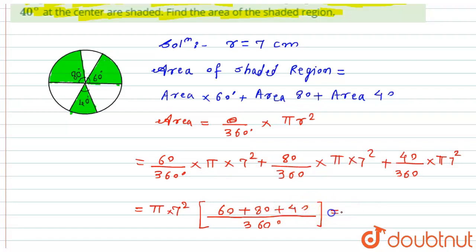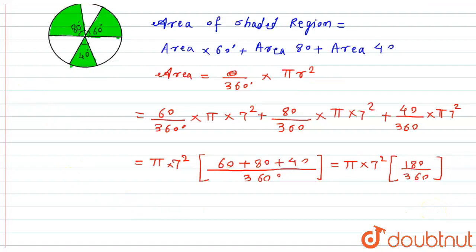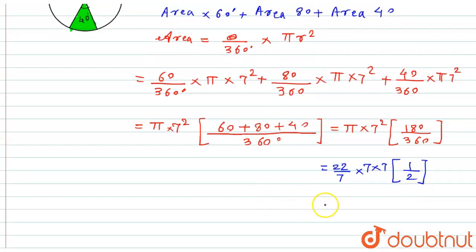Now this will become pi into 7 squared, and the addition of this all will be nothing but 180 divided by 360. Now I will put the value of pi, so here I am putting the value of pi as 22 by 7 into 7 into 7, and this will become nothing but 1 by 2.